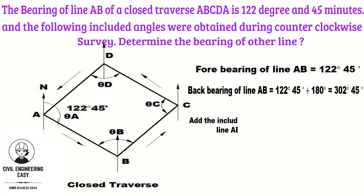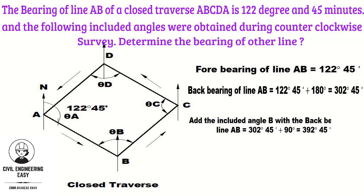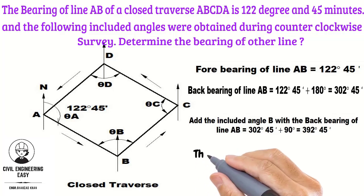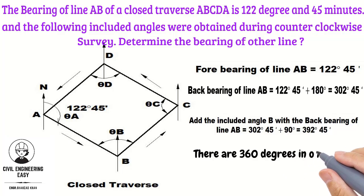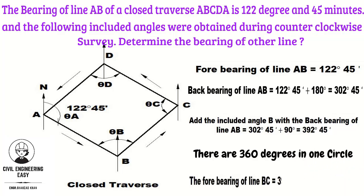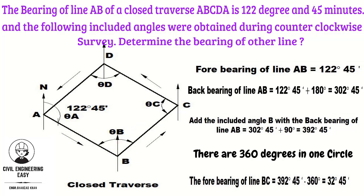Add the included angle Theta B with the backbearing of line AB: 302.45 min plus 90 degrees equals 392.45 min. Since the total angle in one circle is 360 degrees, subtract 360 from 392.45 min. The answer is 32.45 min. So the forebearing of line BC is equal to 32.45 min.